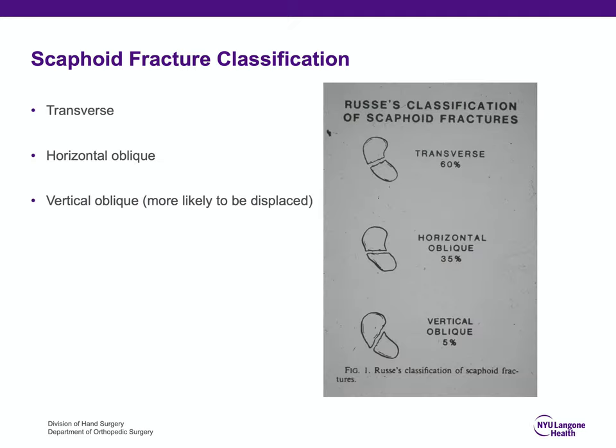There was a classification in the 1960s by Russe, who classified scaphoid fractures into transverse fractures, horizontal oblique fractures, and vertical oblique fractures. The vertical oblique fracture is likely to be the most unstable type and more likely to be displaced or displace over time.